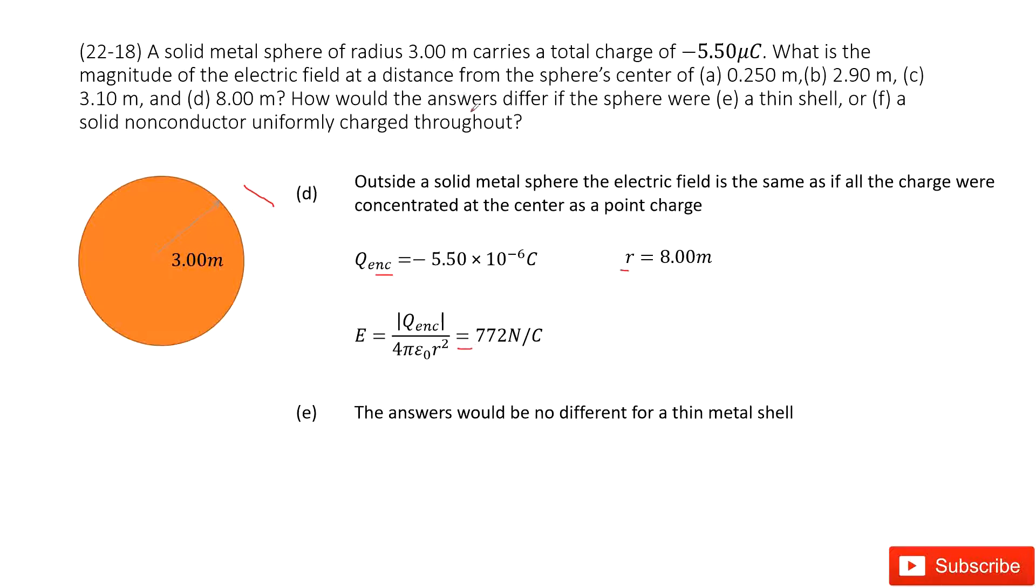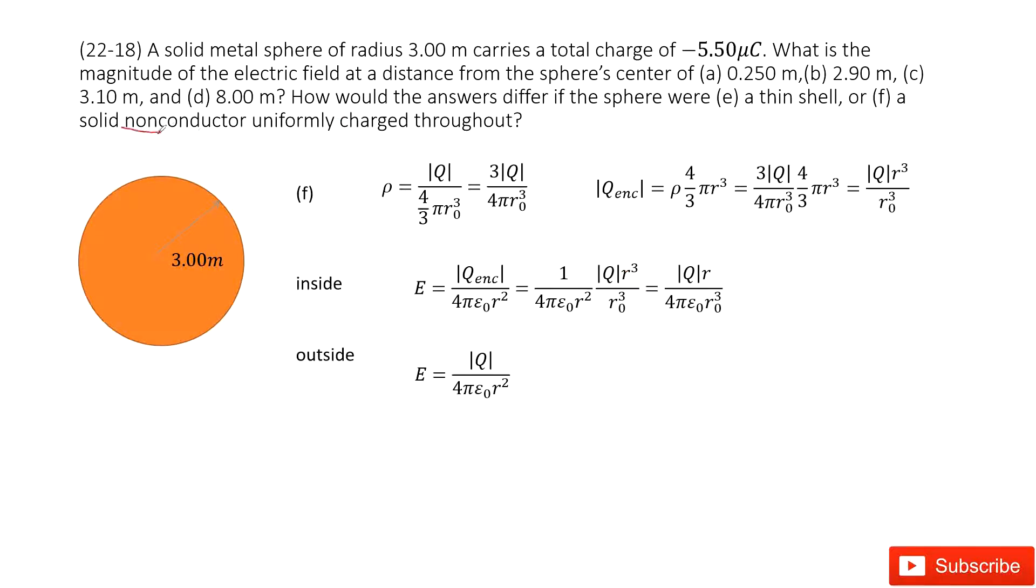Next one asks how would the answer differ if this spherical object is a thin shell? There is no difference for the metal shell. Because for the metal shell, this is still a conductor. The charges are still uniformly distributed at the surface. So nothing changes. But if it is a non-conductor uniformly charged object, the charges are uniformly distributed inside this object.